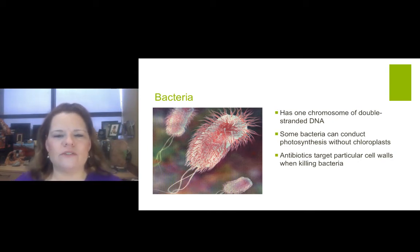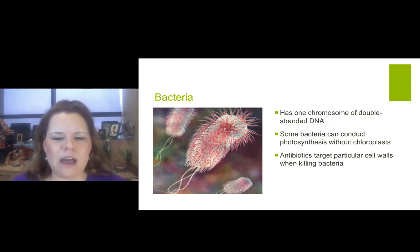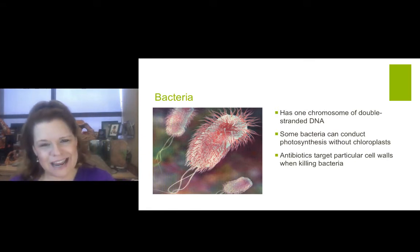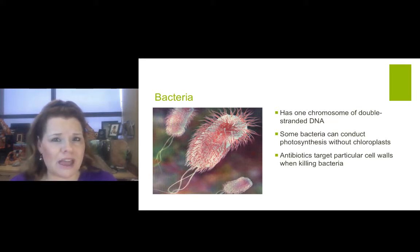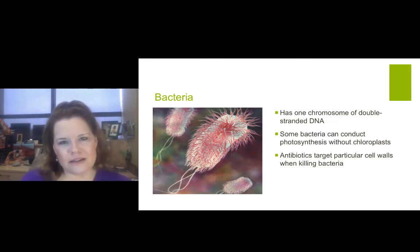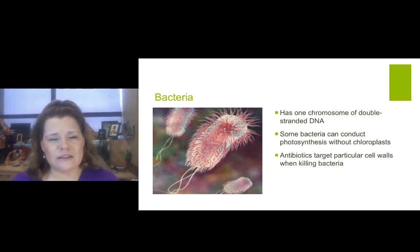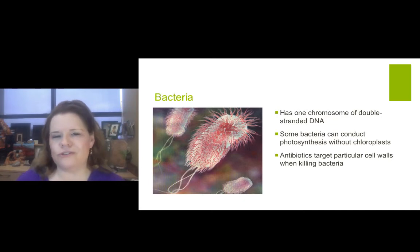Bacteria has one chromosome — a double-stranded DNA. That's how it differs from archaea. Some bacteria cannot conduct photosynthesis without chloroplast. Antibiotics target particular cell walls when killing bacteria. That's one reason you want to be prudent about taking too many antibiotics, so that the bacteria does not develop a better defense mechanism that your antibiotic can't kill. That's why doctors are often hesitant to just prescribe an antibiotic when you get yellow mucus — you really need to have a confirmed infection so we don't overdo it and leave you unable to fight off an infection that could kill you.